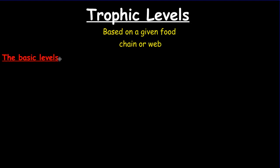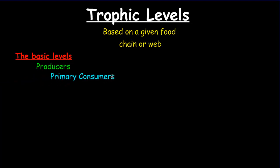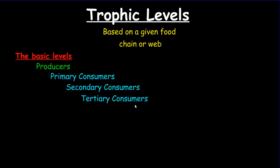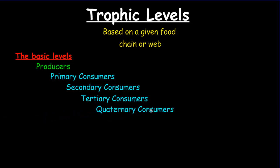The basic levels we will use to describe trophic levels in our ecosystems will be producers, which will be eaten by the primary consumers. Primary consumers will be eaten by secondary consumers, which will be eaten by tertiary consumers and finally quaternary consumers. It is very linear — it's based on a given food chain as we pull it out of a food web.